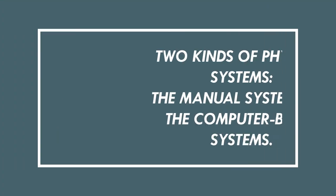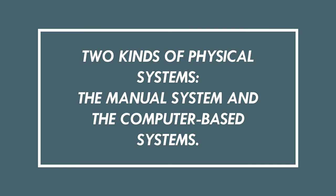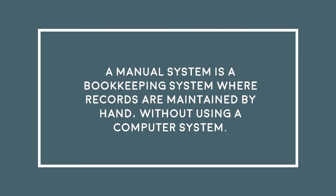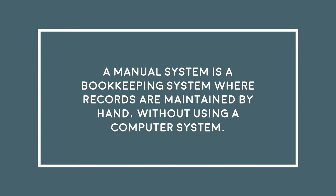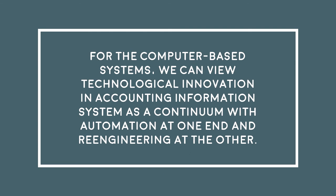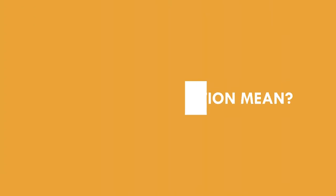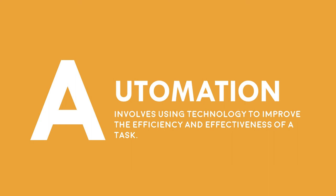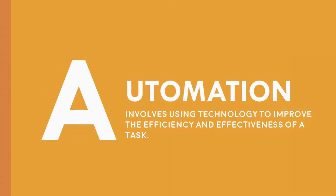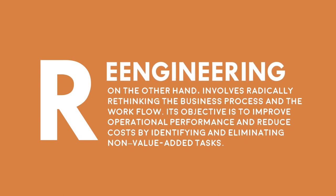Let's proceed with the two kinds of physical systems: the manual system and the computer-based systems. A manual system is a bookkeeping system where records are maintained by hand without using a computer system. For computer-based systems, we can view technological innovation in accounting information systems as a continuum with automation at one end and re-engineering at the other. Automation involves using technology to improve the efficiency and effectiveness of a task. Re-engineering, on the other hand, involves radically rethinking the business process and the workflow.